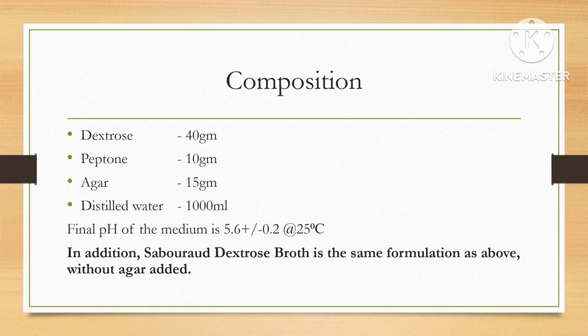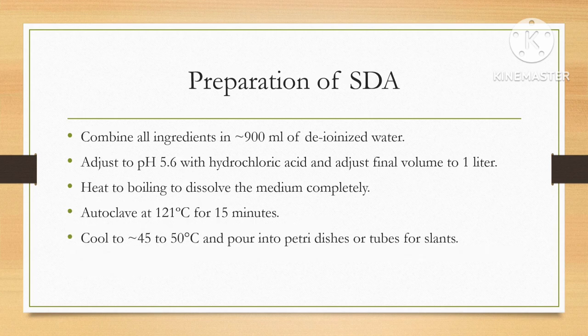SDA broth uses the same formulation as above, but without the 15 grams of agar, removing the solidifying agent to make Sabouraud Dextrose Broth. To prepare SDA, combine all the ingredients in approximately 900 ml of de-ionized water and adjust the pH to 5.6 with hydrochloric acid using a pH meter.